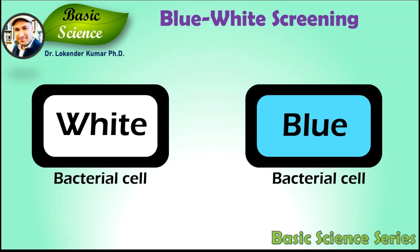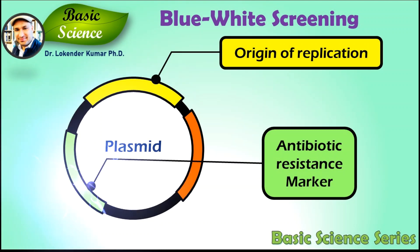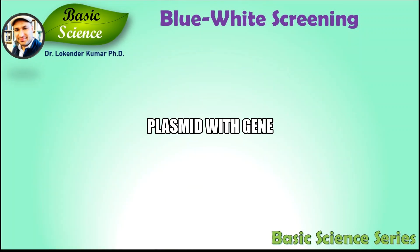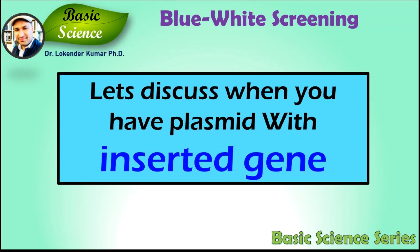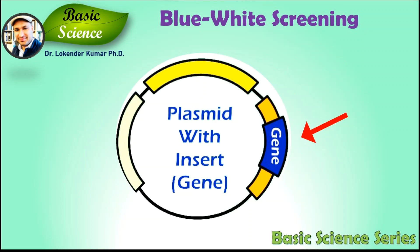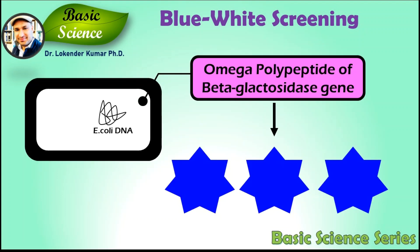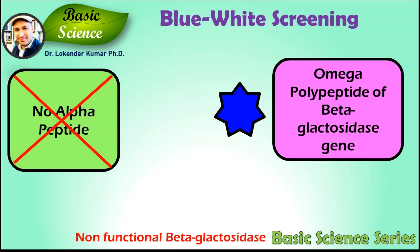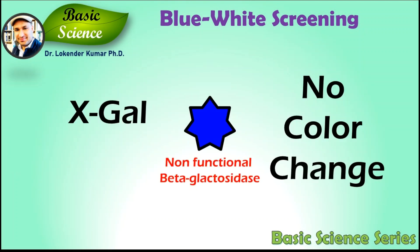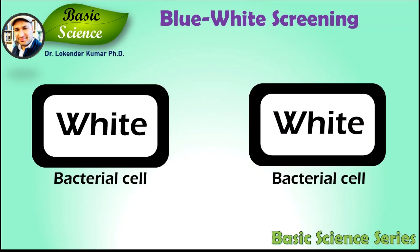The plasmid also has an antibiotic resistance gene marker to kill bacterial cells that lack plasmids. If you add an antibiotic — in most cases ampicillin — cells without the plasmid will not grow since they lack the ampicillin resistance gene. A very important question is: what happens when you paste a gene into the plasmid's multiple cloning site? It disrupts the sequence of the alpha polypeptide unit. Since a new sequence is inserted in the middle of the gene, the alpha polypeptide will no longer be synthesized. The bacteria will produce the omega unit, but without the alpha unit it cannot synthesize full beta-galactosidase, so X-gal will not be converted into a blue product. Hence, the cell will appear white instead of blue.